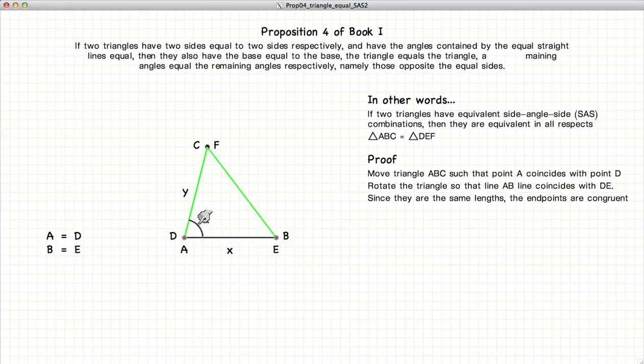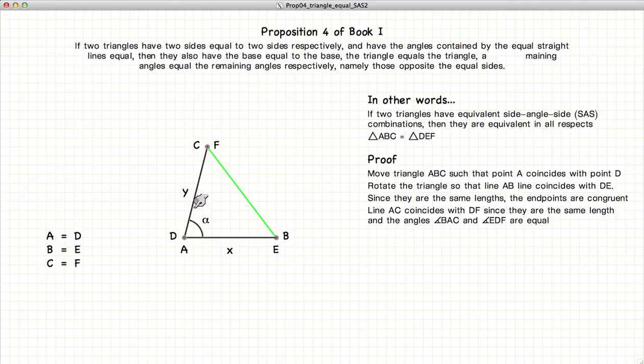If we look at the angle alpha, alpha is again equal in both triangles, which means that AC and DF will also lie along the same direction, and because those two lines are again equal in length, the end points must also be congruent. C and F coincide with one another.